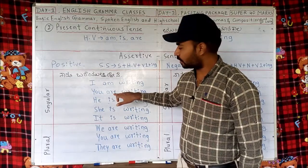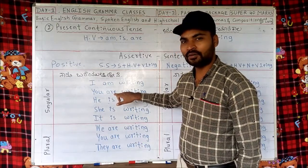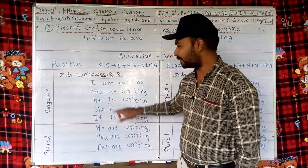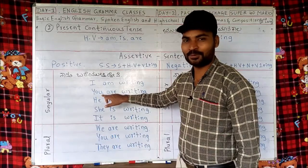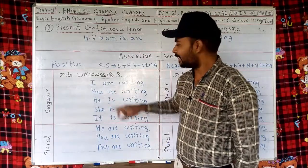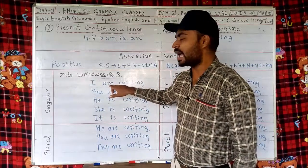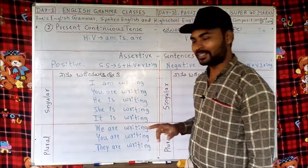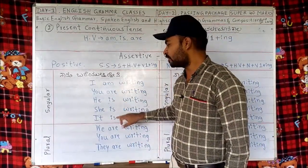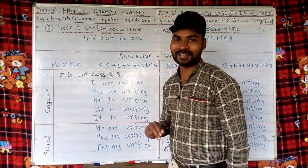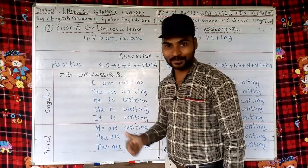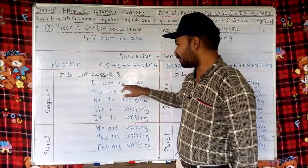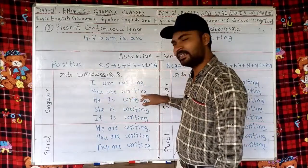With 'you', I have used 'are'. The helping verb 'are' is usually used with plurals, but it is an exception — here, though 'you' is singular, we use 'are' with it. The helping verb 'am' is used only with 'I', in positive, negative, interrogative, or any sentence. Then 'is' is used with singular nouns or pronouns, or singular noun phrases or pronoun phrases.